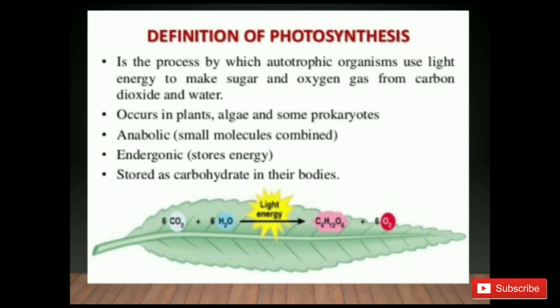Here is the equation. When carbon dioxide is combined with water in the presence of sunlight and chlorophyll, glucose and oxygen are formed. Four factors are necessary for photosynthesis: carbon dioxide, water, sunlight or light energy, and chlorophyll.